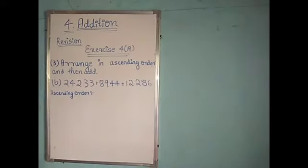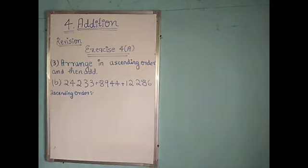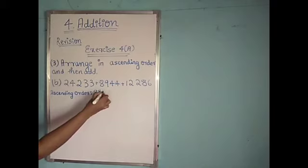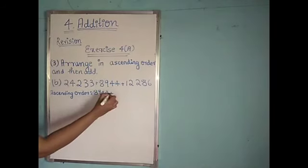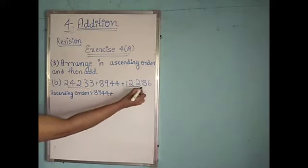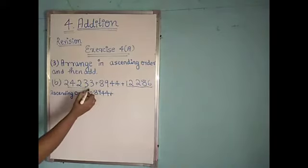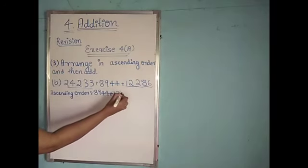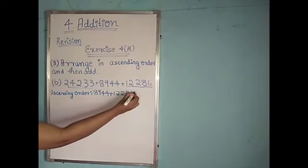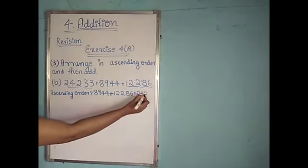Let us solve B1: 24,233 plus 8,944 plus 12,286. First we have to arrange these numbers in ascending order — from the smallest number to the largest. Among these, 8,944 is the smallest number, so we write 8,944 first. Next, 12,286 is the smallest among the remaining, then 24,233.